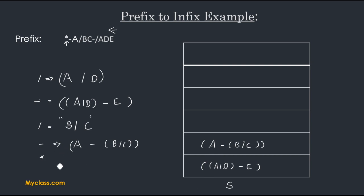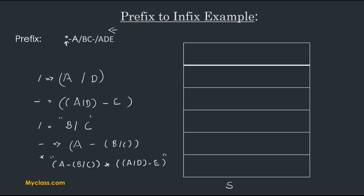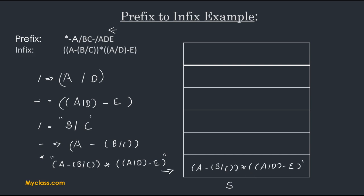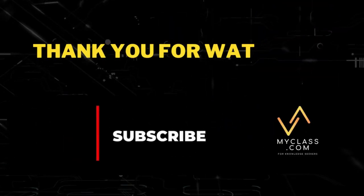That last item is a multiplication operator. We pop the two elements — '(A / D) - E' and 'A - (B / C)' — and make a string by concatenating them with the star operator. After popping, the stack is empty. We then push this final big string back into our stack. This is our complete infix expression.